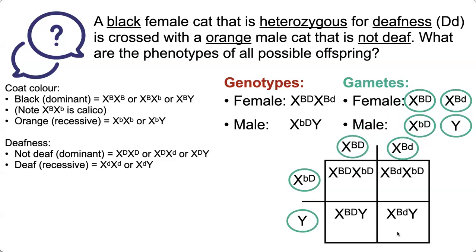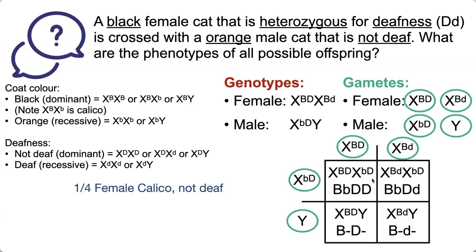If we pull these all down, the Punnett square looks like this. Another thing you could do is simplify this notation, so we're just looking at the Bs and Ds next to each other. This is another way to look at it that can help you answer the question — it means the same thing, but we're focusing in on the Bs and the Ds. With this Punnett square, there's a quarter chance of each portion of the square happening, and we can pull it out and look at the phenotypes.